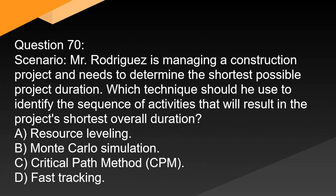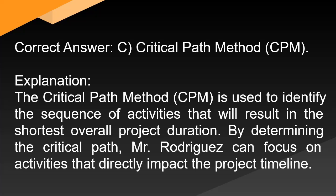Question 70: Mr. Rodriguez is managing a construction project and needs to determine the shortest possible project duration. Which technique should he use to identify the sequence of activities that will result in the project's shortest overall duration? A. Resource leveling. B. Monte Carlo simulation. C. Critical path method (CPM). D. Fast tracking. Correct answer: C. Critical path method (CPM). Explanation: The critical path method (CPM) is used to identify the sequence of activities that will result in the shortest overall project duration. By determining the critical path, Mr. Rodriguez can focus on activities that directly impact the project timeline.